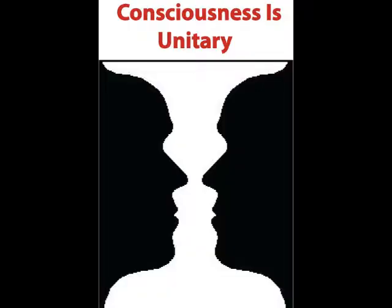Consciousness is unitary because each of us has only one sense of consciousness, and that consciousness tends to do one thing at a time. So we find it hard to multitask, and we have the same sort of problem with perception. For instance, if you look at the drawing, you can easily see it as either two faces or a vase, but you cannot easily view it as two faces and a vase simultaneously. What this suggests is that billions of neurons participating in consciousness at any given moment are acting together as a coherent unit.